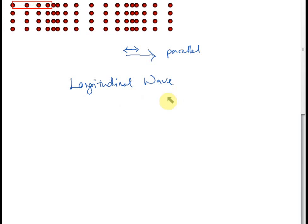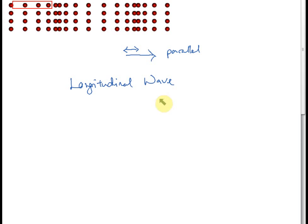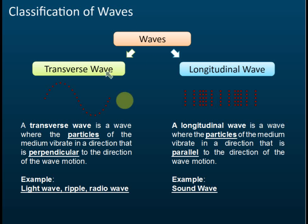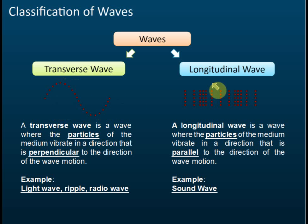So we have two types of waves: transverse wave and longitudinal wave. A transverse wave is a wave where the particles of the medium vibrate or oscillate in a direction that is perpendicular — at right angle, 90 degrees — to the direction of wave motion. A longitudinal wave is a wave where the particles of the medium vibrate in a direction that is parallel to the direction of wave motion.